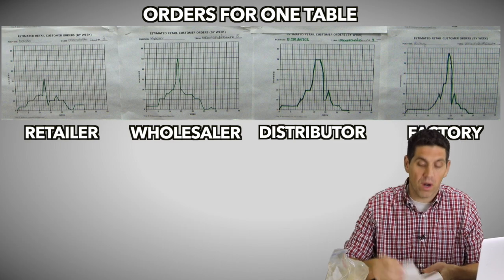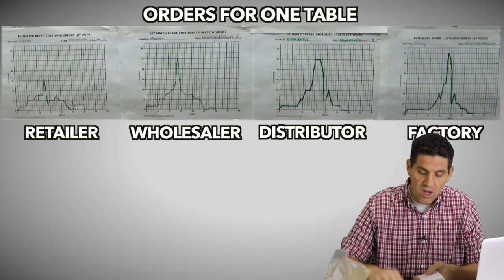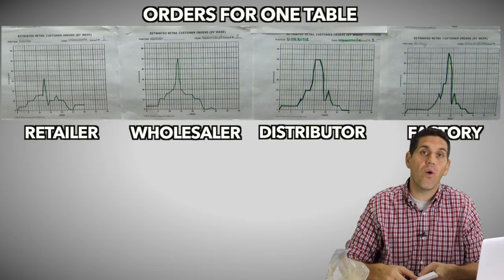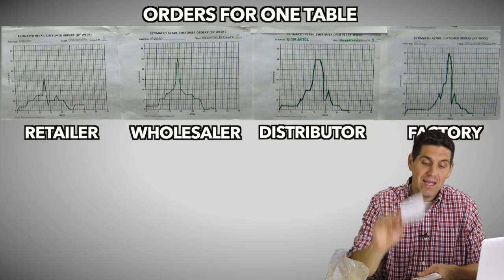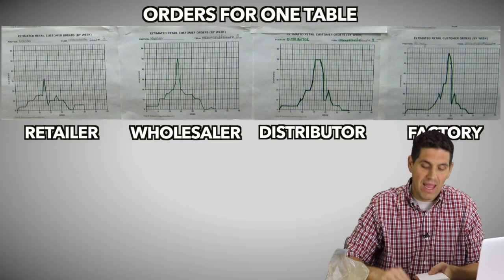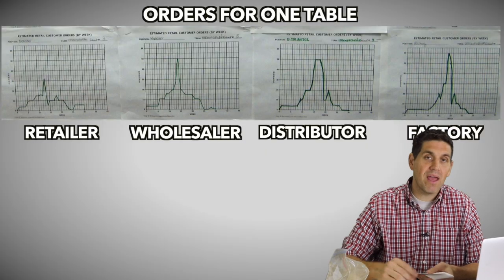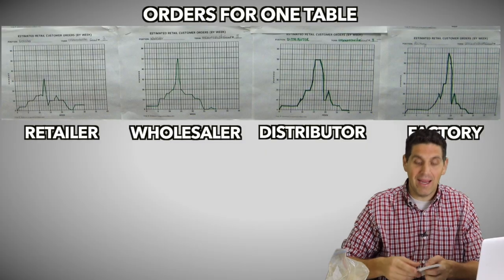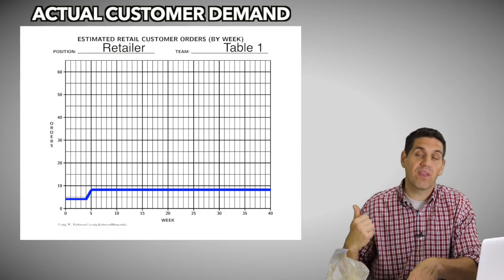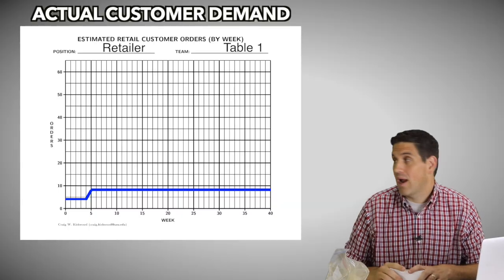And here's the big aha moment. Customer demand in this round, in round one or week one is four, four, four, four. So the first four weeks, it's four and then it pops up to eight and it stays eight every single time. Eight, eight, eight, eight. Customer demand for the entire activity is eight, eight, eight. In other words, this graph should look like this. This is what it should look like, right? But it doesn't. Why?